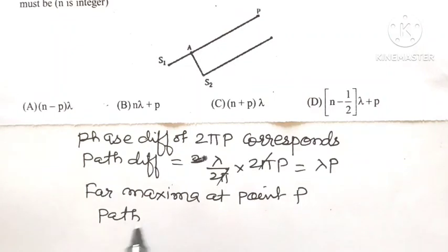Path difference: we have to consider the path difference between the light waves arriving at point P.